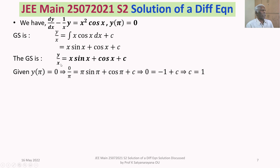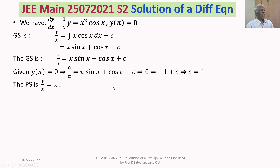Putting y = 0 and x = π into the equation: 0/π = π sin π + cos π + c. Since sin π = 0 and cos π = −1, we get 0 = −1 + c, which implies c = 1. Thus we have evaluated the constant.